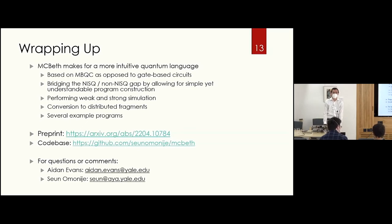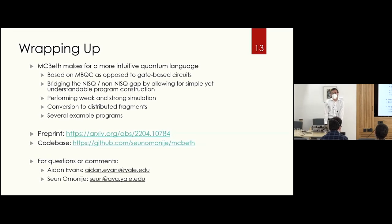Question: You showed teleportation looks simpler in MACBETH — but contrasting verbosity versus OpenQASM, what sort of difference would you see for something like an addition circuit? Response: We haven't looked at addition specifically, but for Deutsch-Joza or Grover — a two-qubit Grover — the oracle is simply a change in the measurement angles while the structure of the underlying physical qubits stays the same, which is one benefit. For Deutsch-Joza, we didn't see as much benefit, but there may be ways we haven't looked at yet.